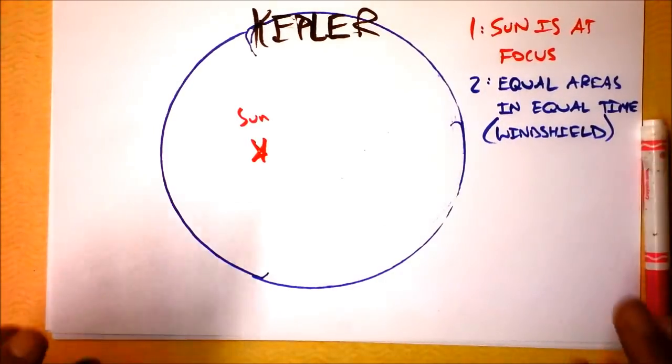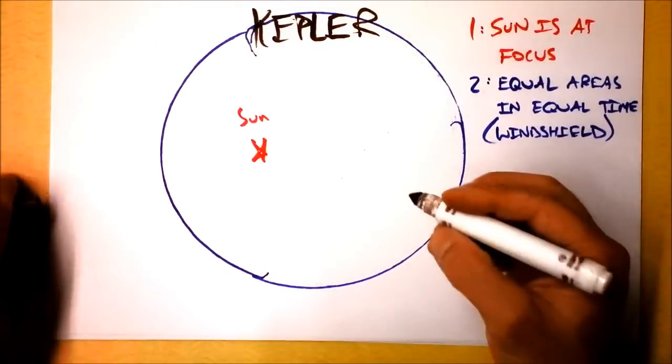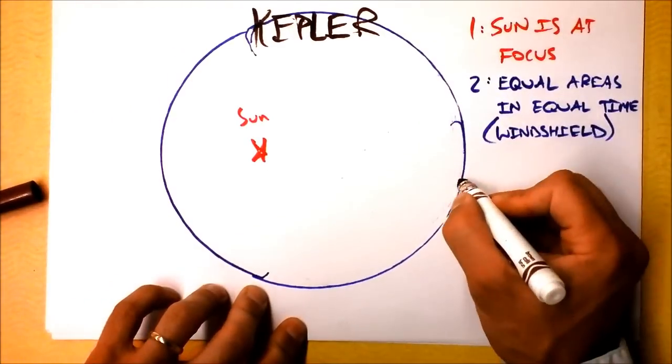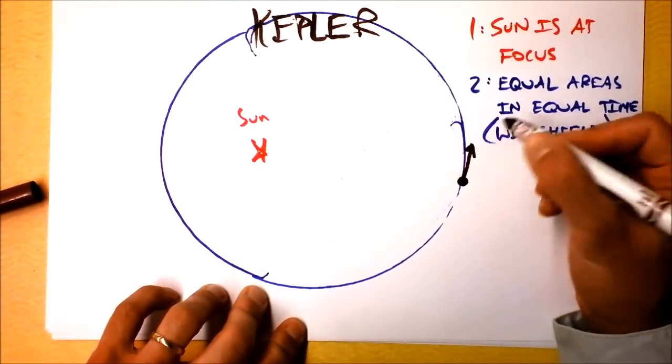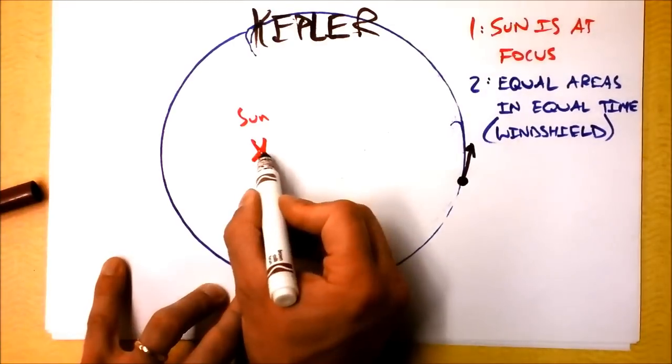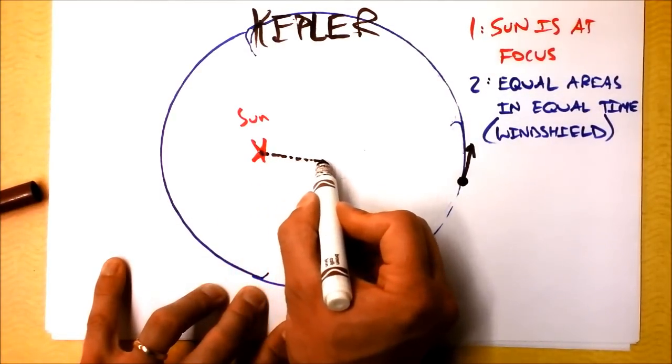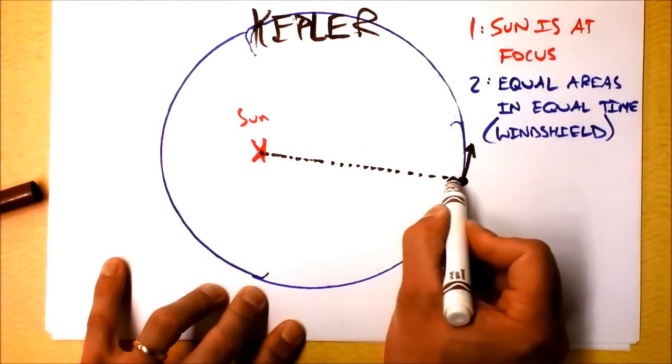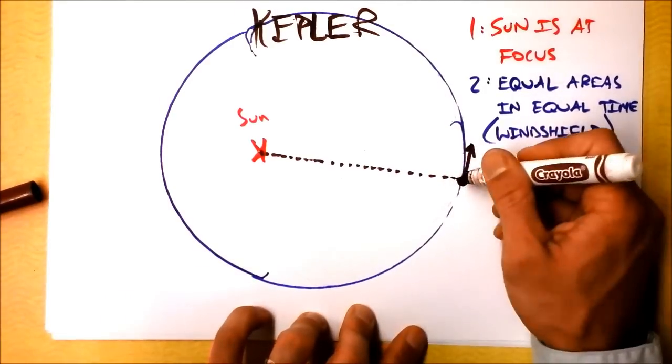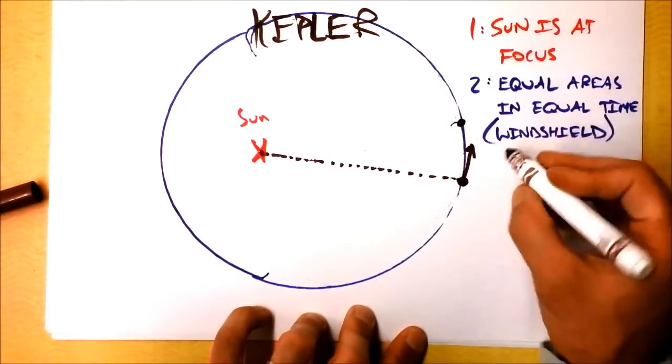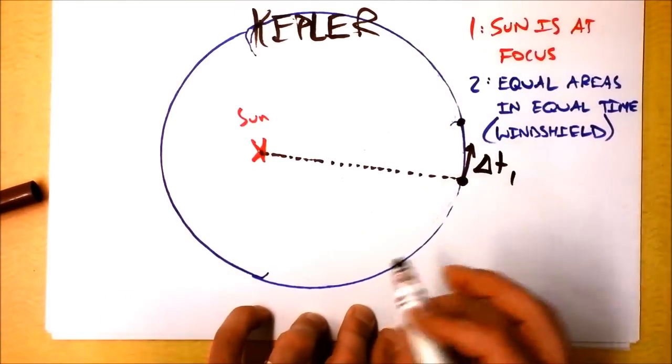The windshield law works like this. If you take the location of a planet at some moment in time, let's say it's a nice brown planet and it's over here. And let's say that planet is going counterclockwise around the star, we could draw a windshield wiper from the sun to the planet. And in some amount of time, let's call it delta T1...